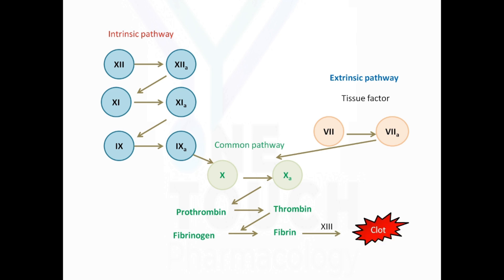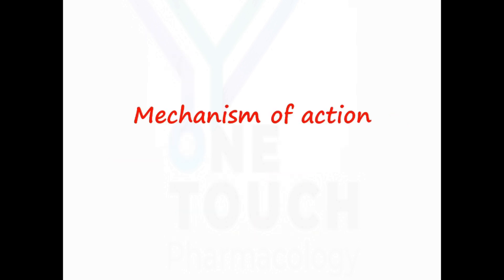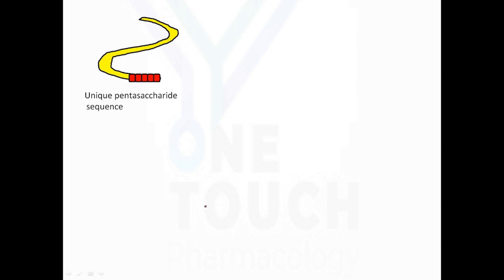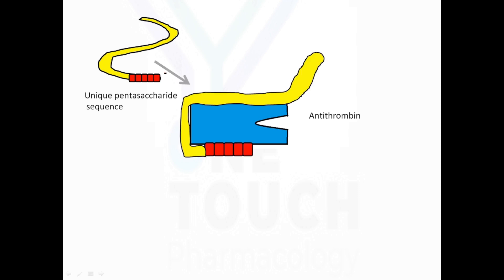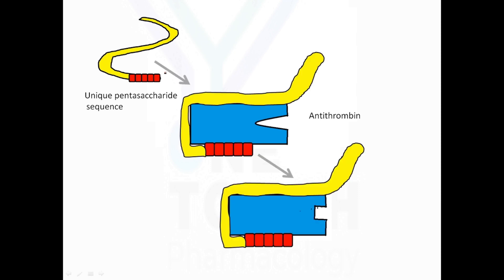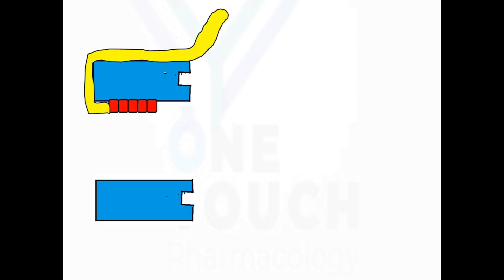Fibrin with the help of factor XIII forms a stable clot. Now the mechanism of action of heparin: unfractionated heparin has a unique pentasaccharide sequence. With the help of this pentasaccharide sequence, it attaches to antithrombin and produces a conformational change of the active site of antithrombin III. This activated antithrombin III then binds to factor Xa and inhibits it.